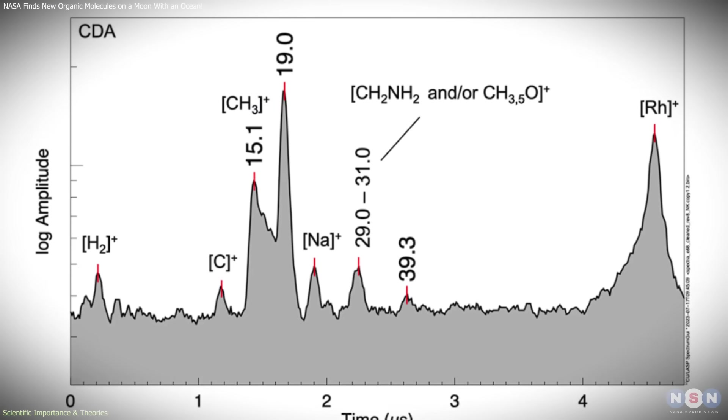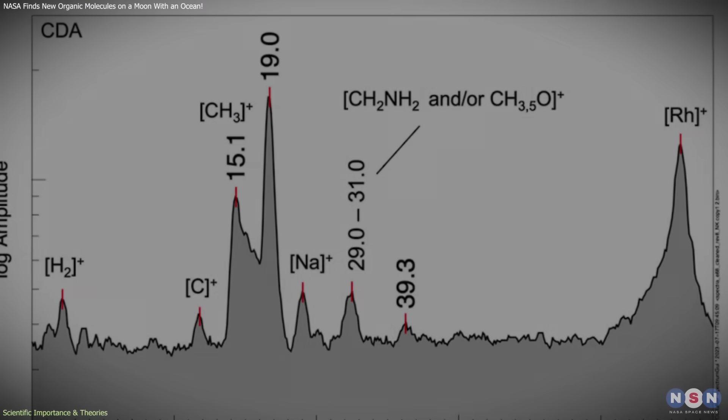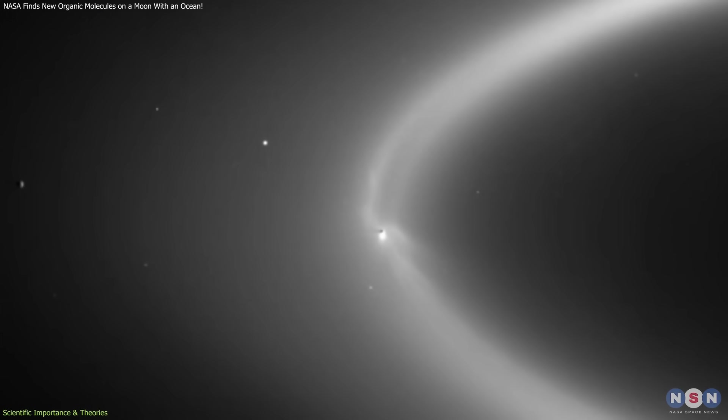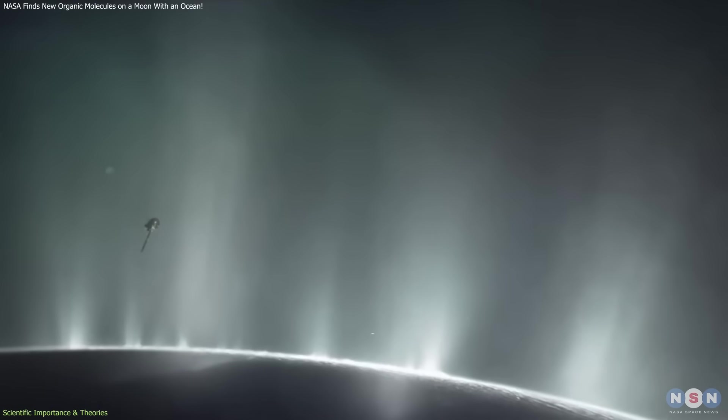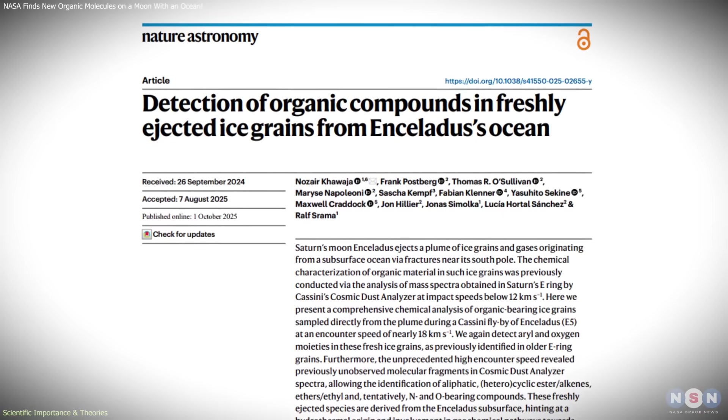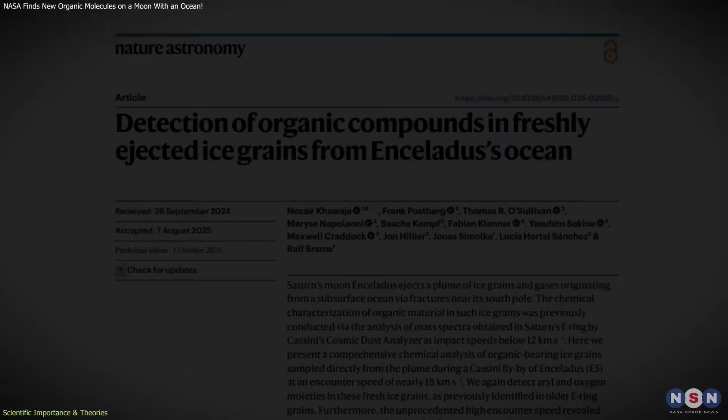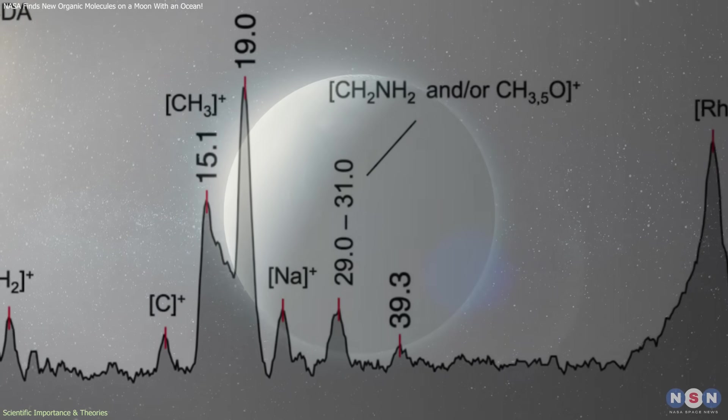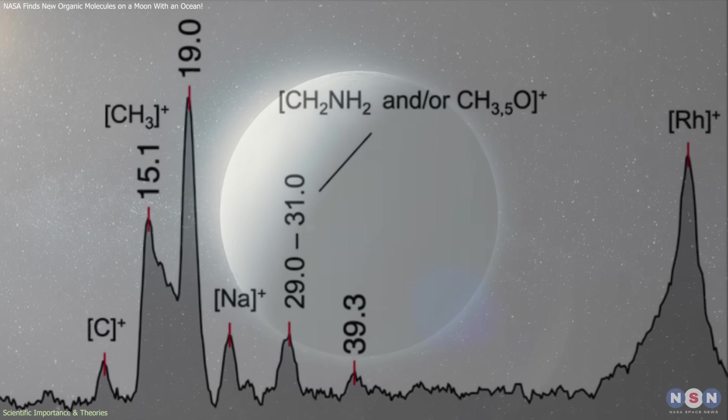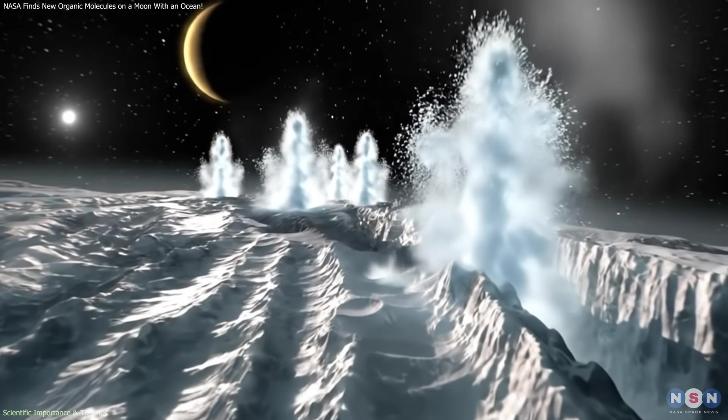Importantly, the fresh samples reduce uncertainty about the origin of these molecules. Previous ambiguity arose from the fact that material in the E-ring could become altered after long exposures to radiation. By contrast, the plume particles analyzed in this study reflect the ocean's chemistry more directly. This provides stronger evidence that the diversity of organics originates within the moon, rather than being shaped artificially by space weathering.